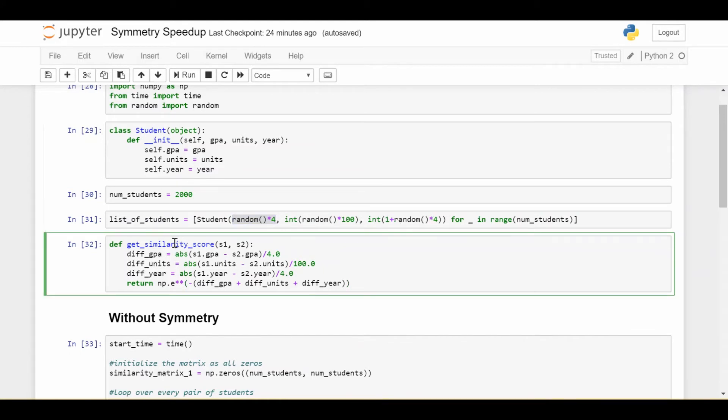And then we define a similarity score. So given any two students, student 1 and student 2, it's not very important that we understand the exact similarity score. But suffice it to say, it's bounded between 0 and 1. And the more similar two students are, the closer it's going to be to 1. And the less similar students are, the closer it's going to be to 0.